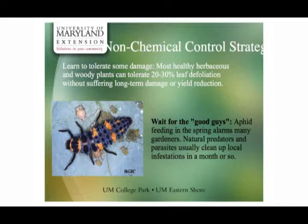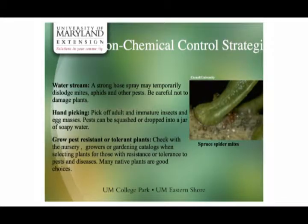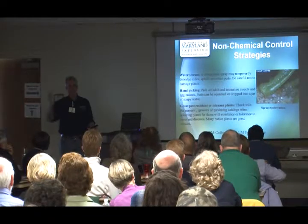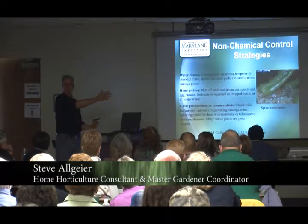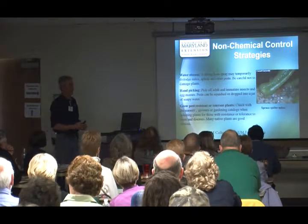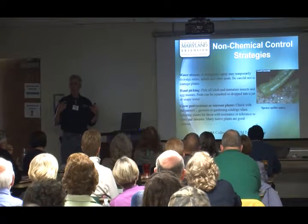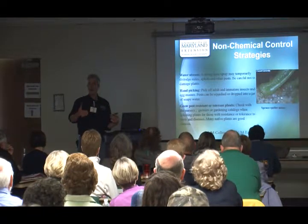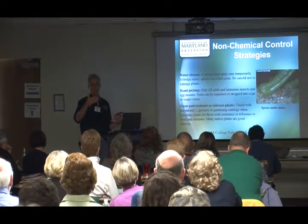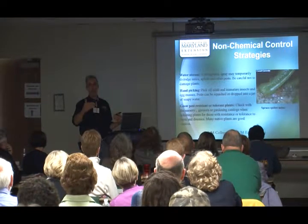Wait for the good guys — very hard for Americans to do. We generally don't enjoy applying chemicals but sometimes we need to. IPM doesn't mean organic. A frequent recommendation: just take your garden hose and spray that plant down as hard as you can. If your Alberta spruce starts going brown from spruce spider mites, a garden hose works just as well as a miticide. But you need to stay on the ball and be out there monitoring.